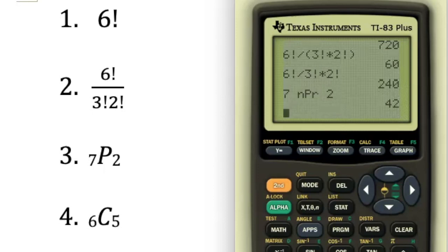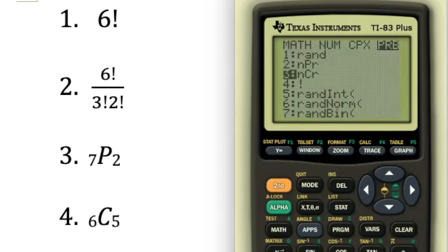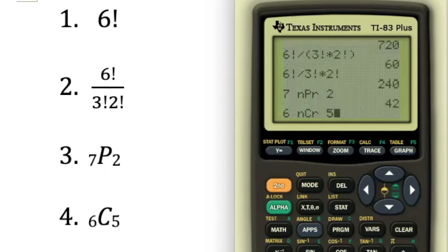To type in the last one, 6C5, you hit 6, go to the probability menu, choose nCr, and put in 5. With either one of those commands, if you're going to do something else to it, you want to put it in parentheses. So if you're going to take 6 choose 5 and divide it by, say, 5, you want to make sure to put that numerator, the whole thing, in parentheses to make it clear.